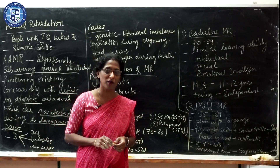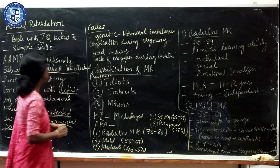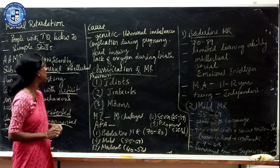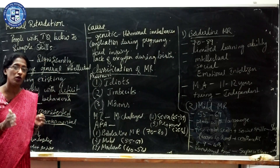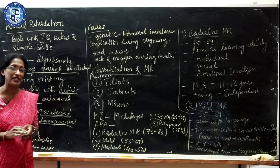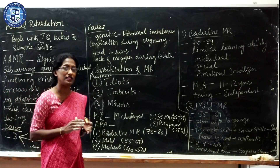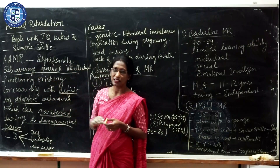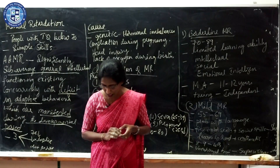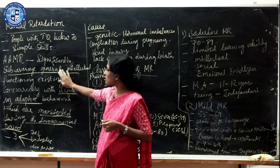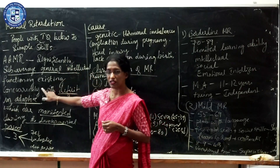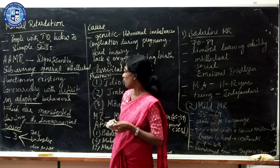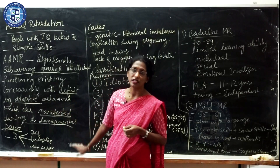Hello students, welcome back to psychology class. Let us learn about mental retardation today. People with IQ below 70 are termed as mentally retarded. They have difficulty in learning simple tasks. The American Association for Mental Retardation defines mental retardation as significantly sub-average general intellectual functioning existing concurrently with deficits in adaptive behavior, which are manifested during the developmental period.